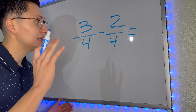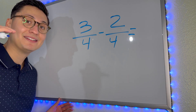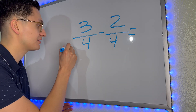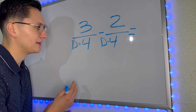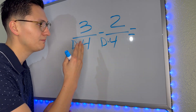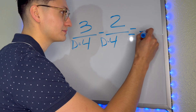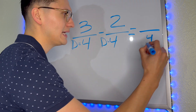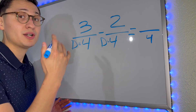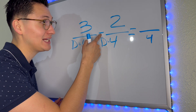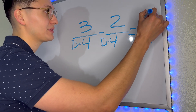First thing we do, look at the denominator. We established that the denominator is the number downstairs. Let's look at the denominator — we have four here and we have a four here. Are they equal? Correct, they are equal. So we can automatically put the denominator there. Now we are subtracting — we look at the sign. We are subtracting. Therefore, three minus two is one.